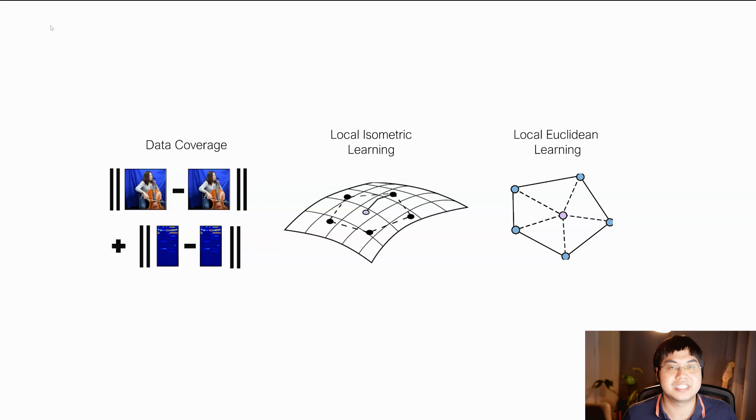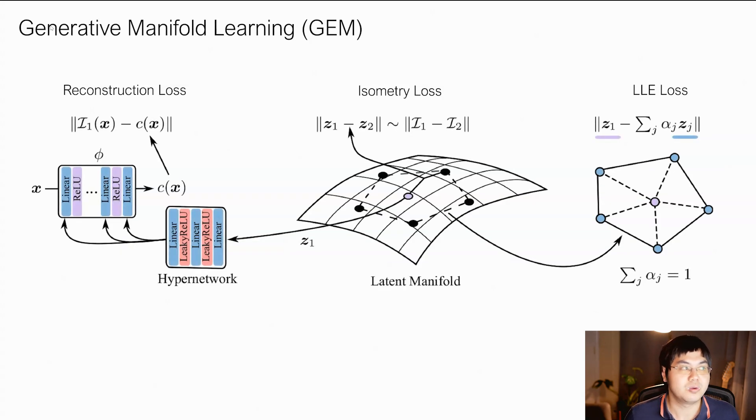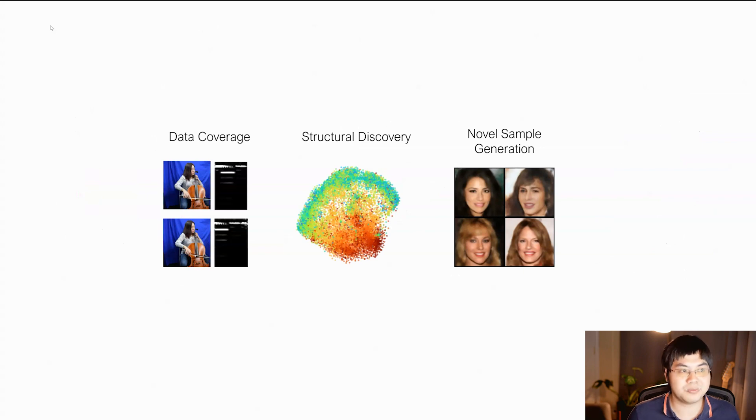We provided three losses, which we may add together to make a manifold over any data modality. By combining each of these, we construct our model generative manifold learning, which we call for short, GEM. Next, we assess how GEM can enable us first to capture the entire data distribution, and then discover the underlying structure in data, and finally generate new samples.